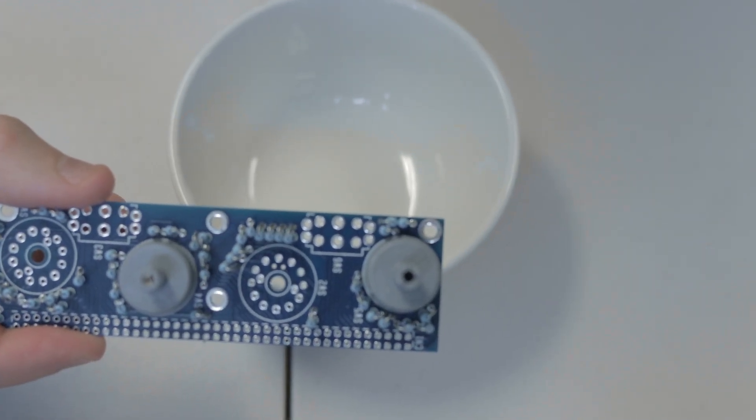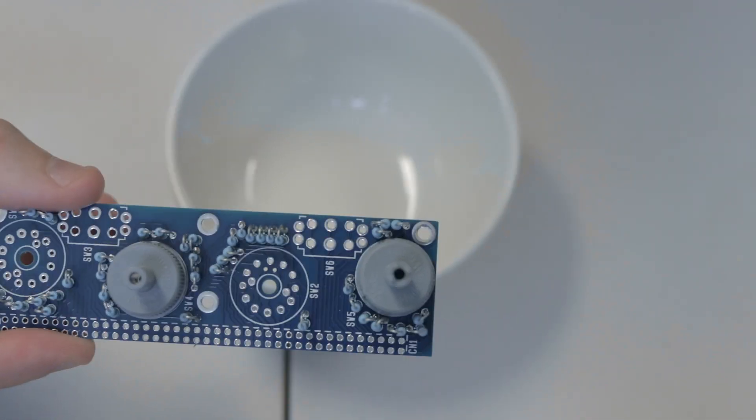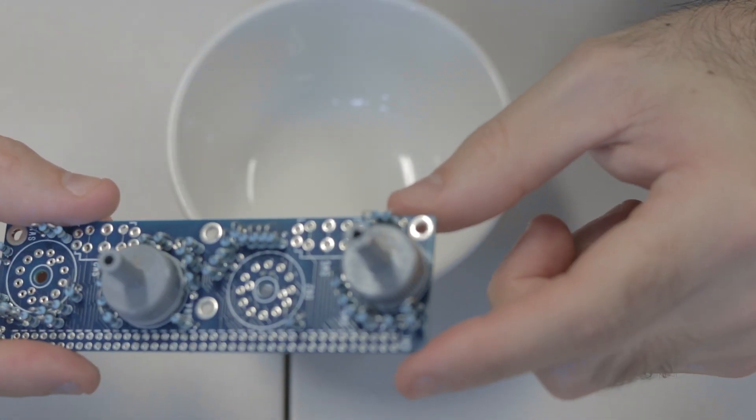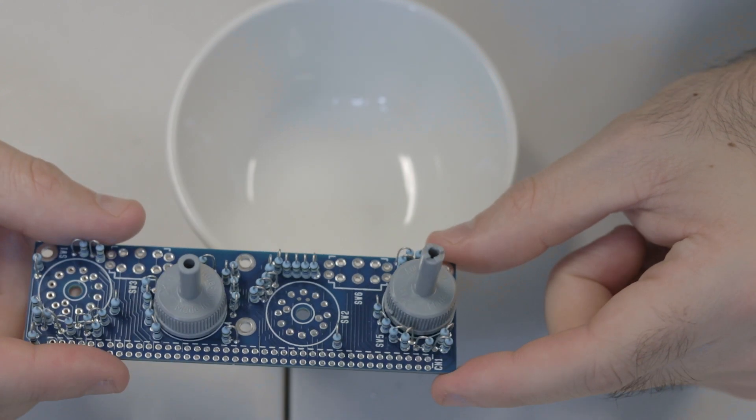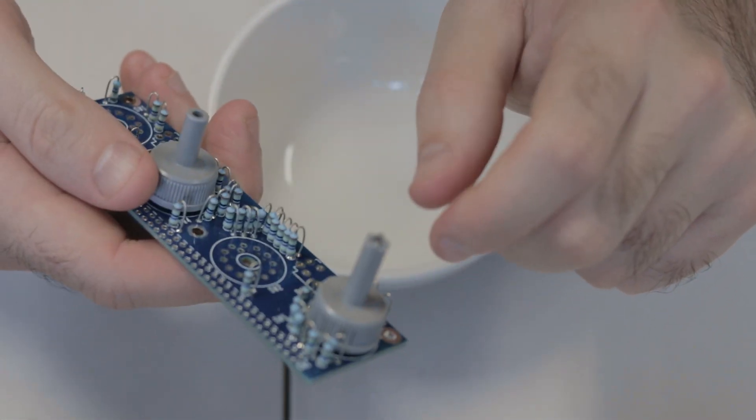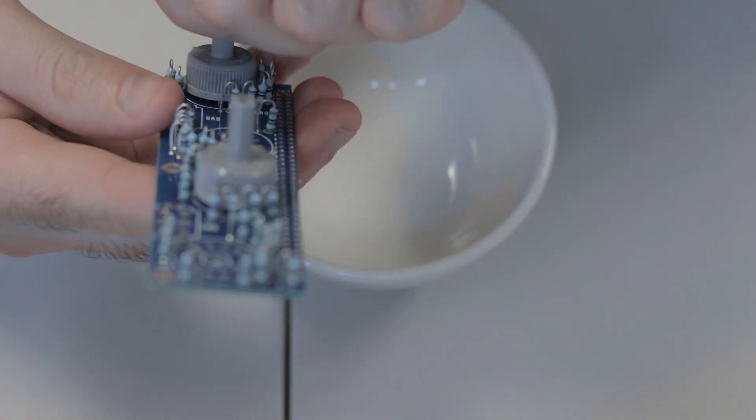And that's going to be for your high pass filter. So that will be positioned on SW5, so make sure you get these all in the correct spots.